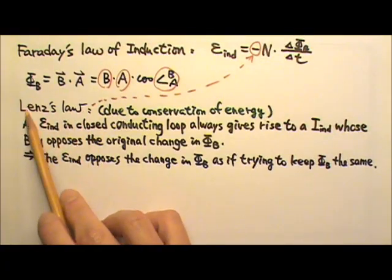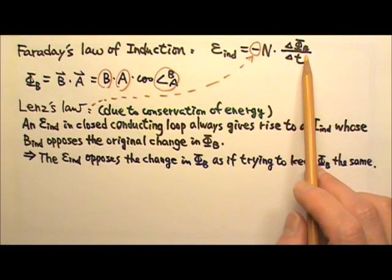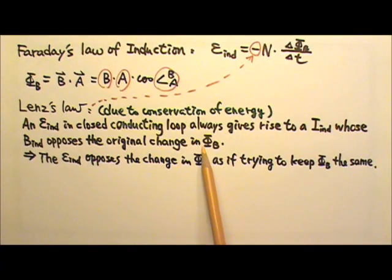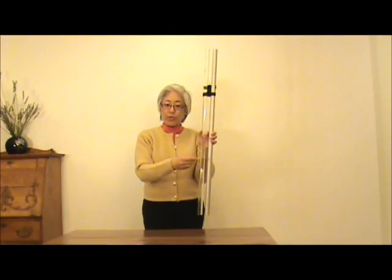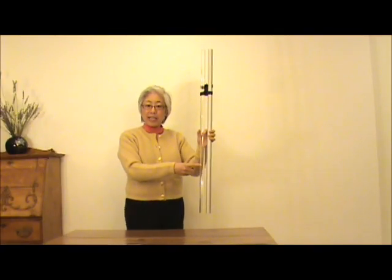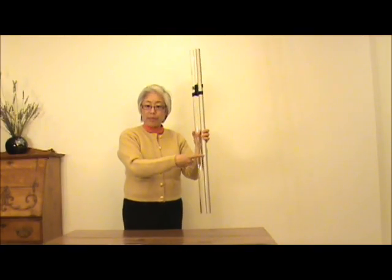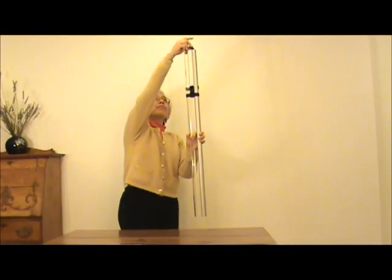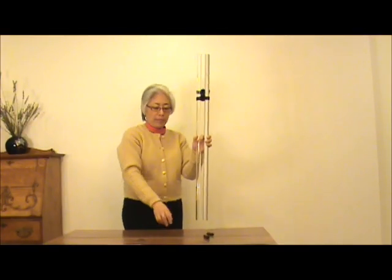According to Lenz's Law, whenever we change the magnetic flux through a conducting loop, we would encounter a resistance force, because the induced current always opposes the change in flux. Let's look at these two hollow tubes. One is made of clear plastic, the other one is aluminum. I have these two small cylinders and I'm going to drop them through the tubes. And they came right out. I'm going to drop them again.